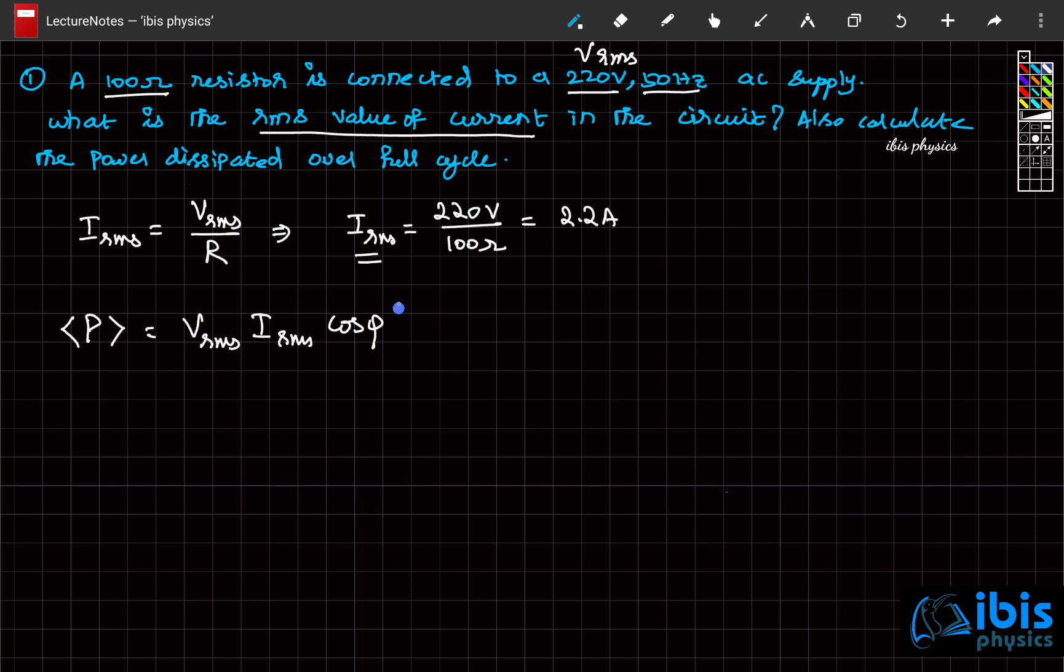So φ is actually 0 degrees. VRMS is 220 volts and IRMS is 2.2 ampere, and cos φ is cos 0 degrees, which equals 1. So 2.2 times 220 is 484.